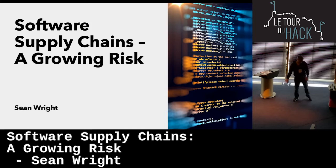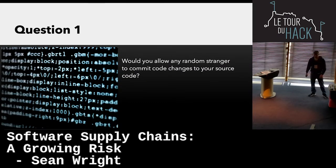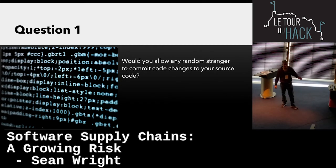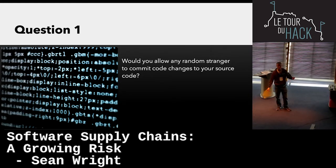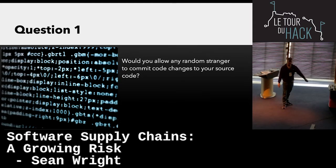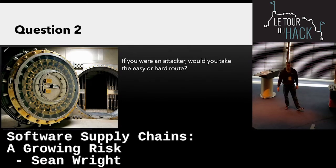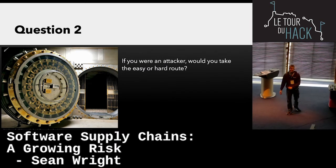I'm going to start off with two questions — don't answer them now, I'll come to them at the end. Just keep thinking about them throughout this presentation. The first question is: would you allow any stranger off the street to commit code to your code repository? The second one: if you were an attacker, would you take the easy route or the hard route?